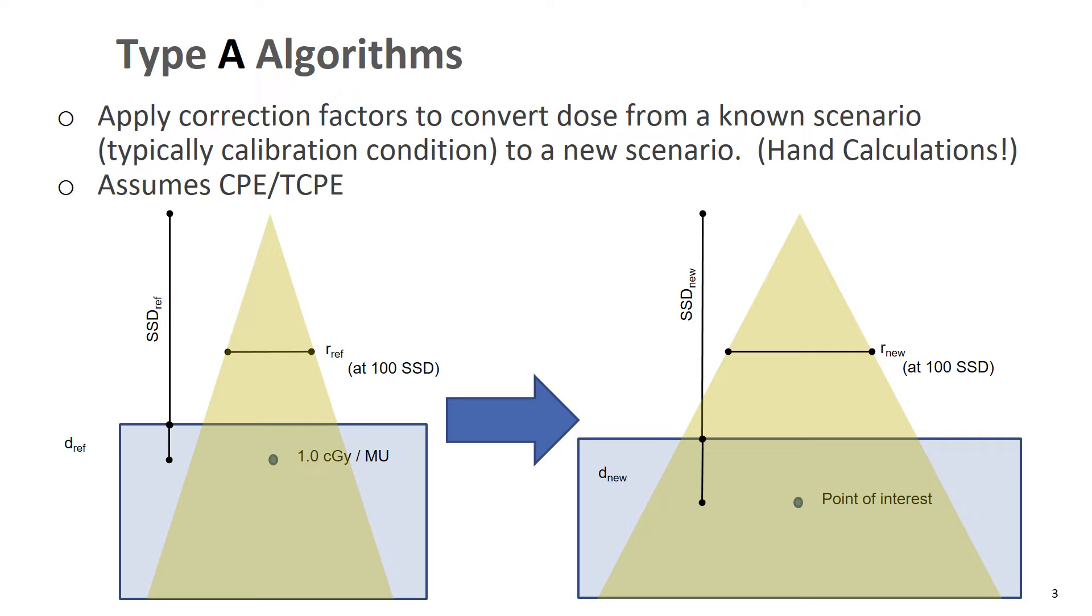And so we want to convert dose from the situation on the left where we know what the dose is to this new situation on the right. And we can use a series of empirically measured correction factors, whether that's a scatter factor, or an inverse square correction for distance from the isocenter, or a percent depth dose curve, or a tissue maximum ratio curve, or a wedge factor if we've got a wedge or a tray placed in the beam. We have these empirically measured correction factors that we can use to convert the dose from the situation on the left to the situation on the right.